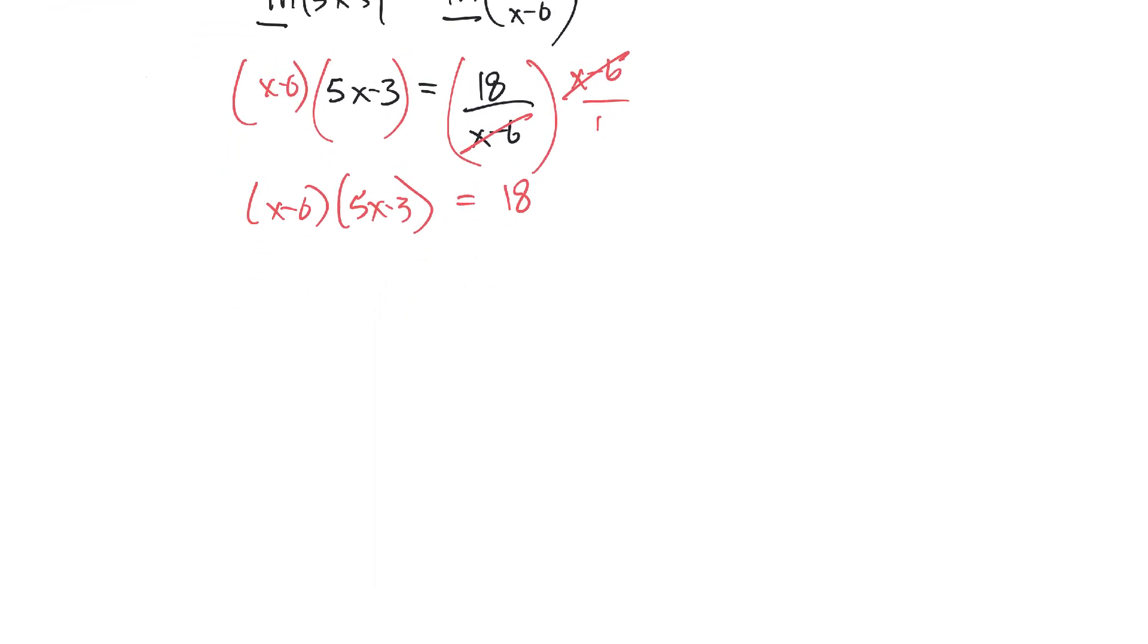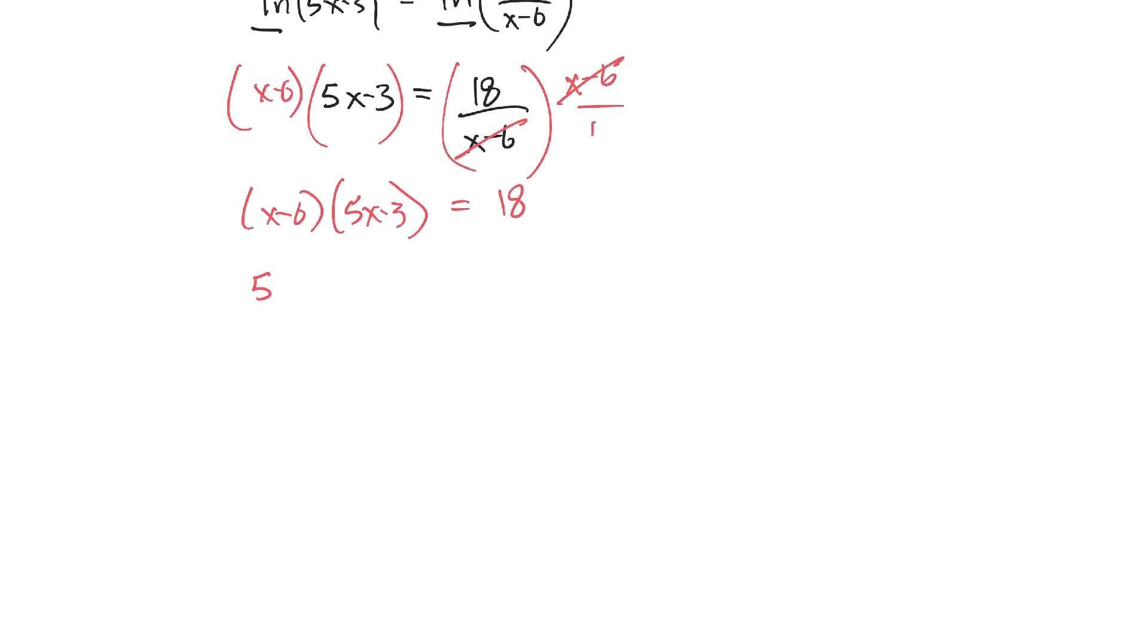Okay, it looks like it's a quadratic, so I'll foil this on the left. So I'll have 5x squared minus 3x minus 30x plus 18 equals 18.